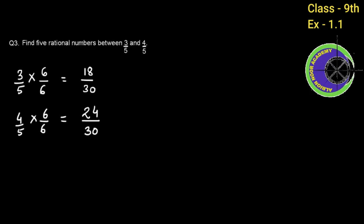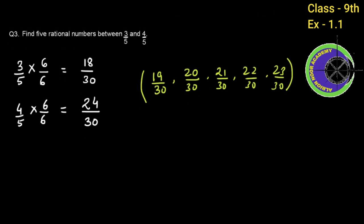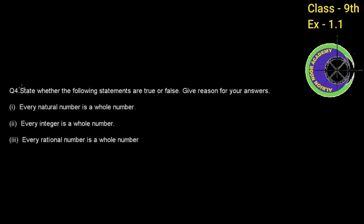So the 5 rational numbers between 3 by 5 and 4 by 5 are: 19 by 30, 20 by 30, 21 by 30, 22 by 30, and 23 by 30. That gives us exactly 5 rational numbers.